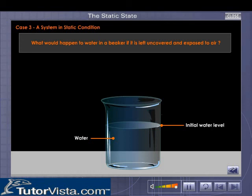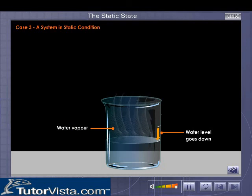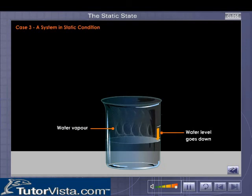Case 3: A System in Static Condition. A beaker containing water exposed to air is an open system. The water evaporates into the air. Though water vapour ultimately precipitates as rain, evaporation that takes place in an open container is considered to be static because the rate of evaporation is not equal to the rate of condensation.